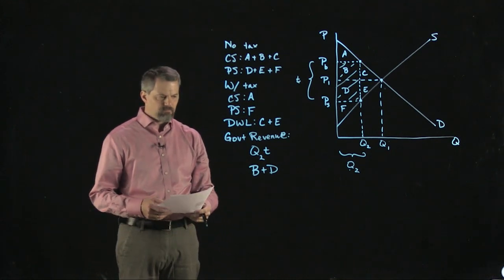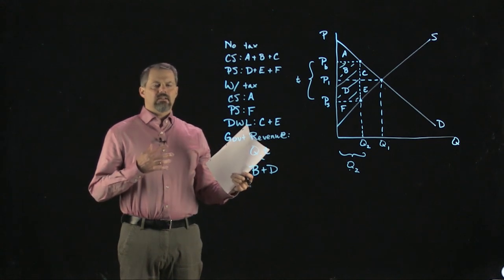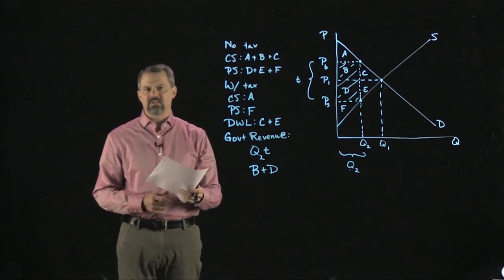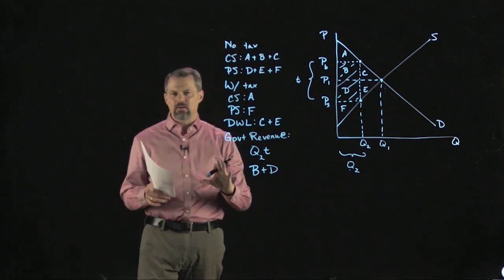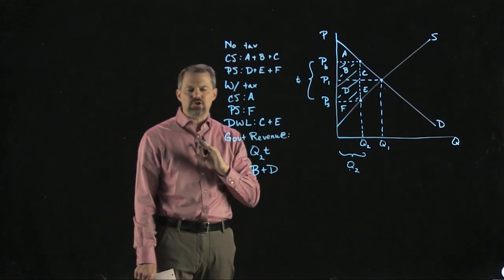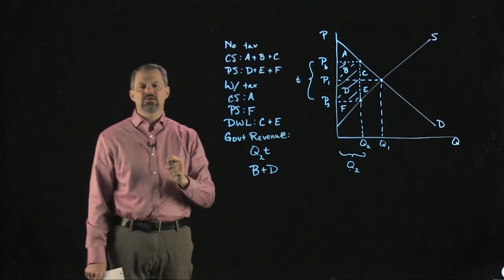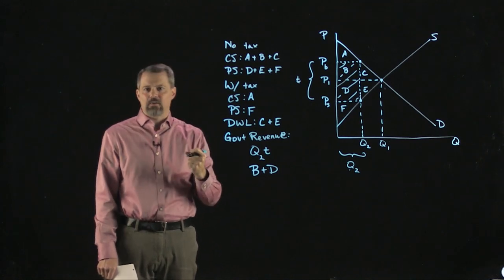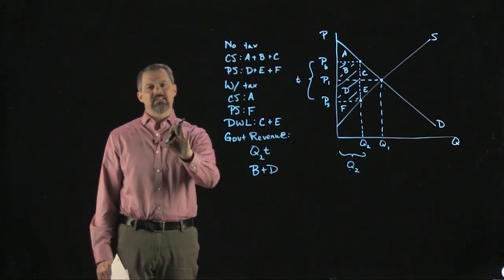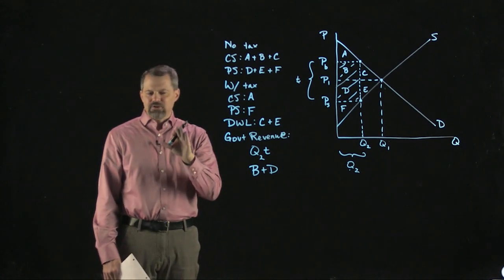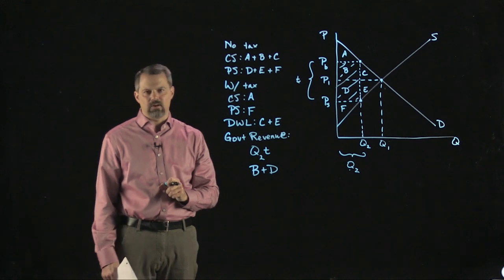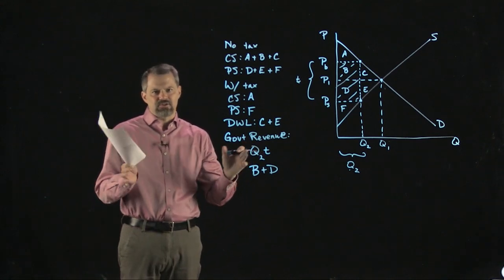A tax burden falls on both buyers and sellers regardless of which side is actually taxed. The government is powerless to determine the incidence — they can choose who mechanically pays, but that's just a formality. From an economics perspective, it doesn't matter.